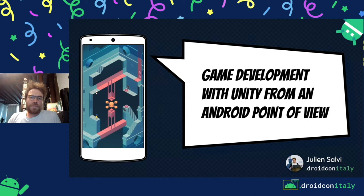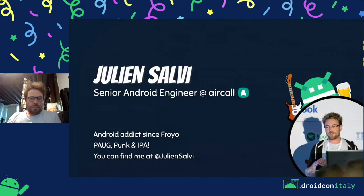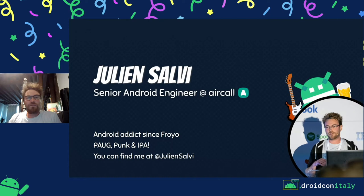I'm Julian Selvey, a senior Android engineer at Aircall, a VoIP startup based in Paris. I've been in the Android world since Froyo, so it's almost 10 years that I've been developing Android apps — I started with Android 2.2. I'm part of the Paris Android User Group for Android meetups in Paris. I listen to punk rock music and drink IPAs. You can find me on Twitter at Julian Selvey.